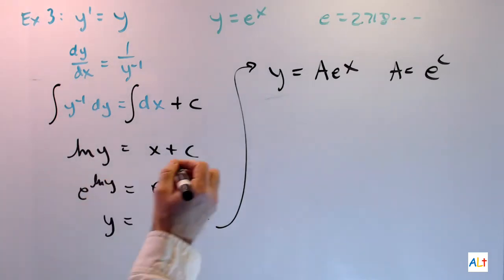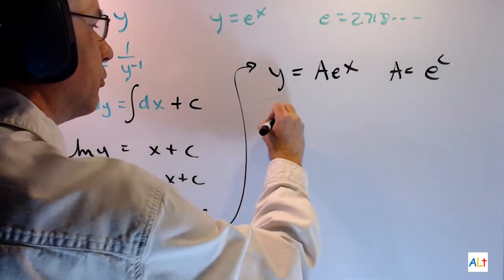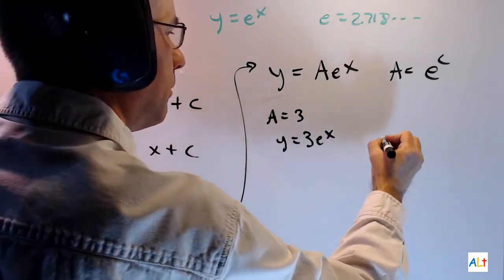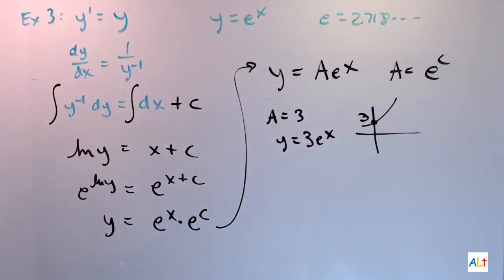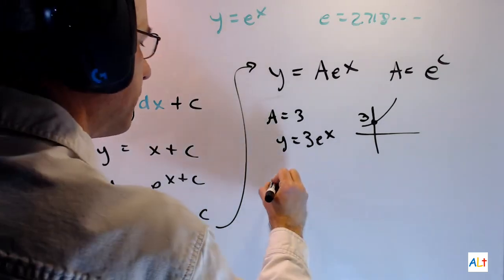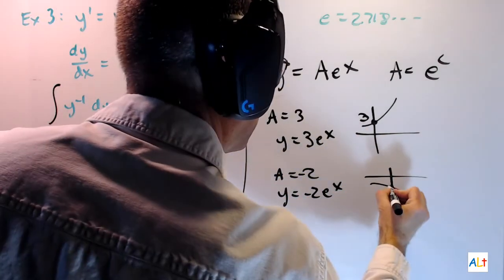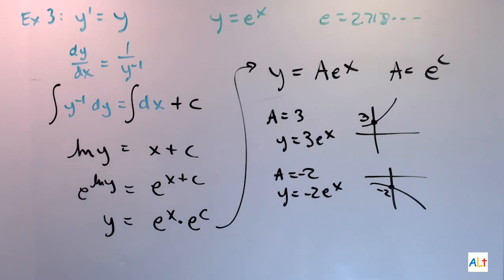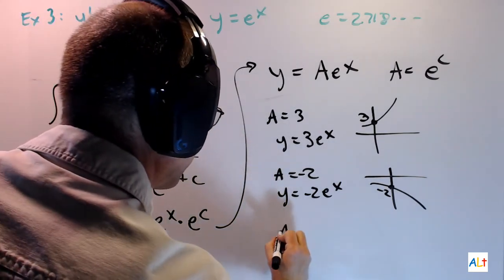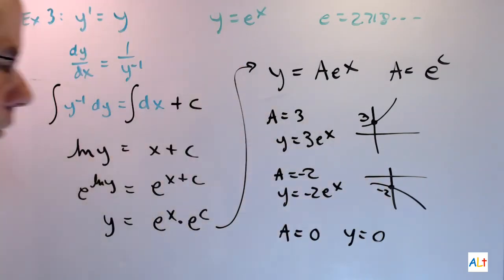So here are some examples of particular solutions. There is an exponential function with an intercept at y equals 3. There's another one. And actually, a equals zero also gives us a solution. If y is zero, then y prime is certainly zero. So that'll be a solution as well.